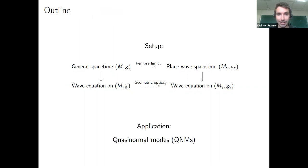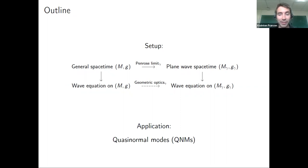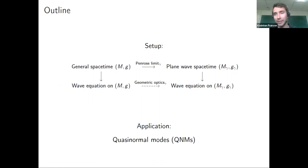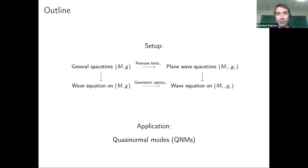The plan is: first I'll talk about the Penrose limit and what plane wave spacetimes are. Then, rather than formally matching the two, I'll apply this specifically to quasi-normal modes — the free perturbations on a black hole background which are observed in gravitational wave experiments — but only in the high real-frequency approximation where the geometrical optics approximation is valid. I'll end with conclusions.